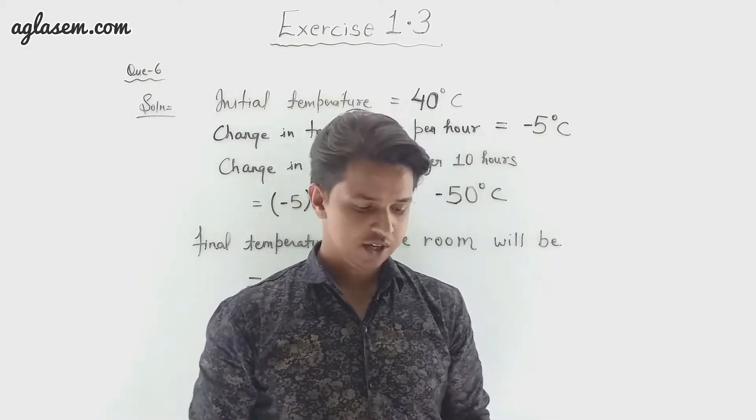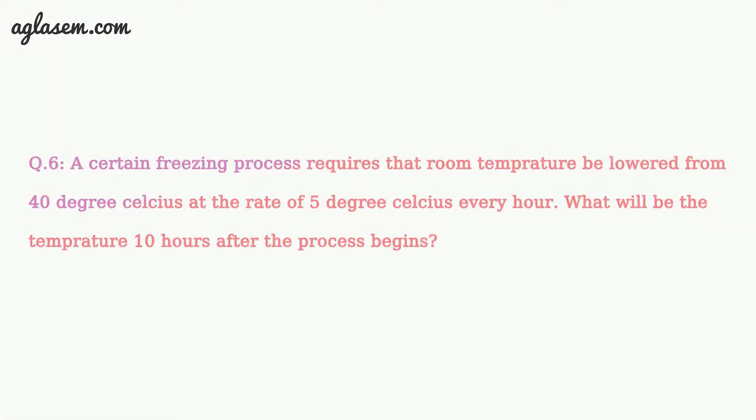The question is: a certain freezing process requires that room temperature be lowered from 40 degrees Celsius at the rate of 5 degrees Celsius every hour. What will be the room temperature after a 10-hour process begins?